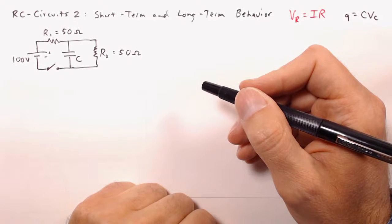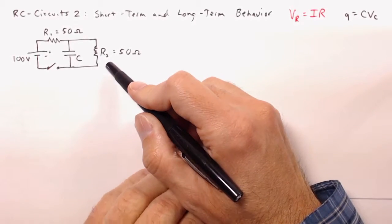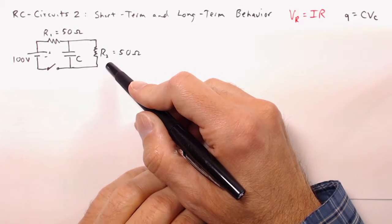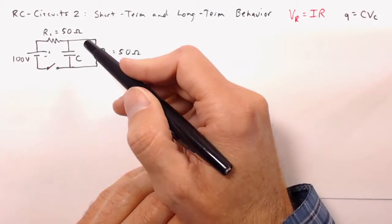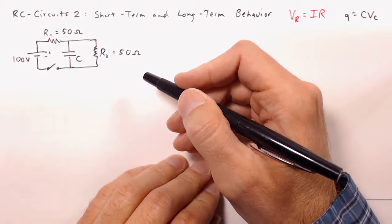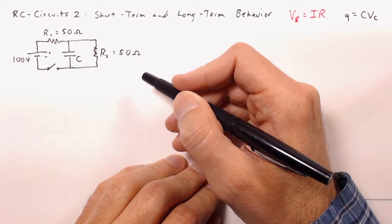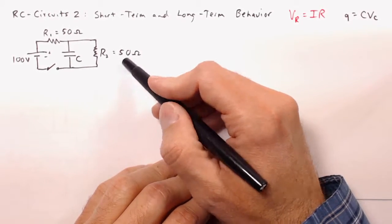RC Circuits 2: Short-Term and Long-Term Behavior. Here we have an example of an RC circuit that's a little bit more complicated than the last one I showed you. We've got multiple loops, two resistors instead of one, and because it's more complicated, the math that I showed you last time is not going to apply to this circuit.